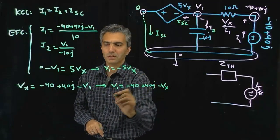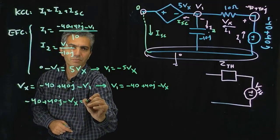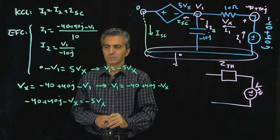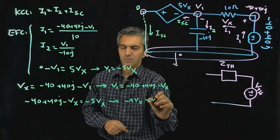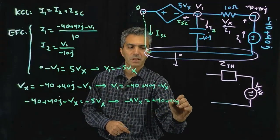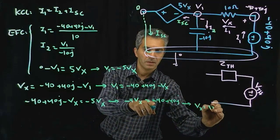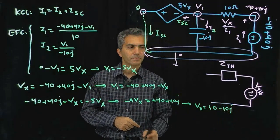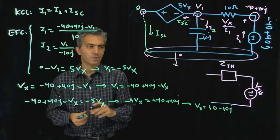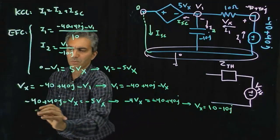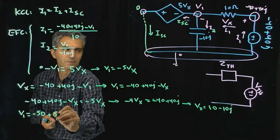So I equate the two, so minus 40 plus 40J minus Vx is equal to minus 5Vx, which means minus 4Vx is equal to minus 40 plus 40J. And therefore, Vx is simply 10 minus 10J. Once I have Vx, I can calculate I1 and I2 and V1 and everything else. So from this, first of all, V1 is equal to minus 50 plus 50J.